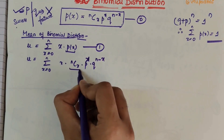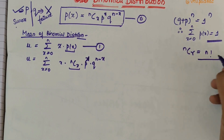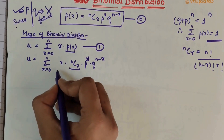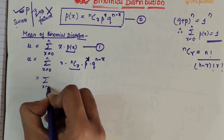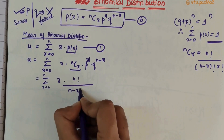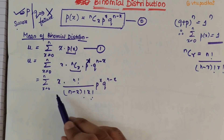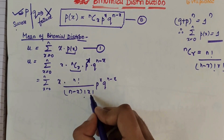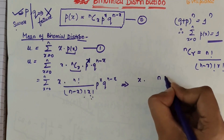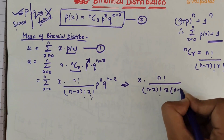Now expanding NCX — just as NCR expands to N factorial over (N minus R factorial times R factorial) — we expand NCX to get the summation from X=0 to N of X times N factorial over (N minus X factorial times X factorial) times P^X times Q^(N-X). Since X factorial equals X times (X-1) factorial, we can cancel the X in the numerator with the X from X factorial.